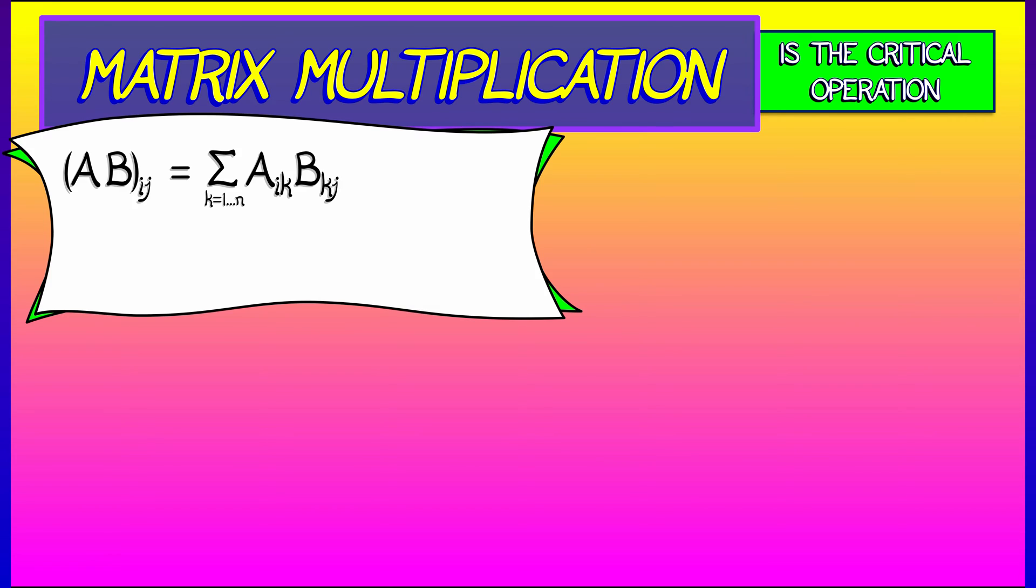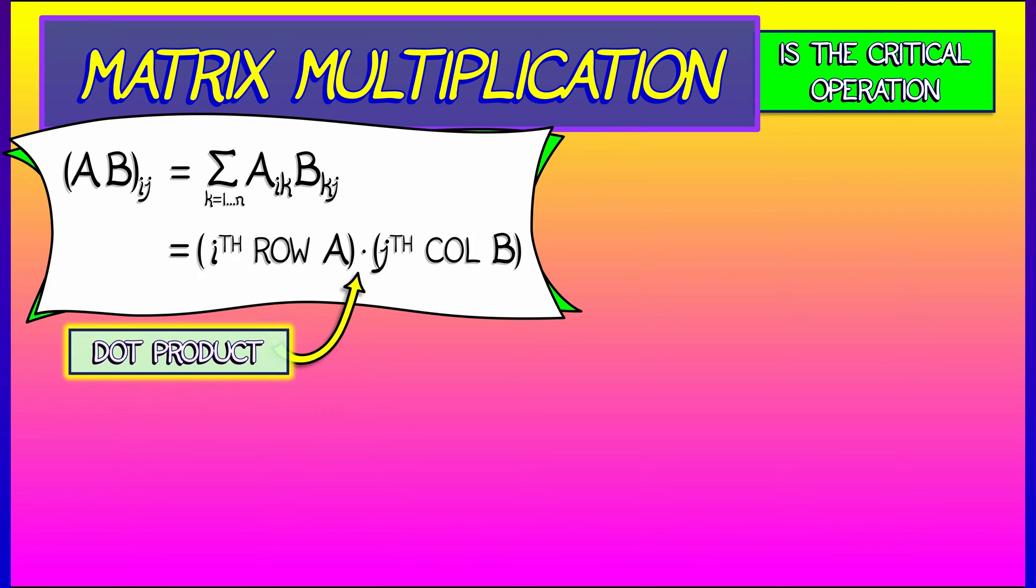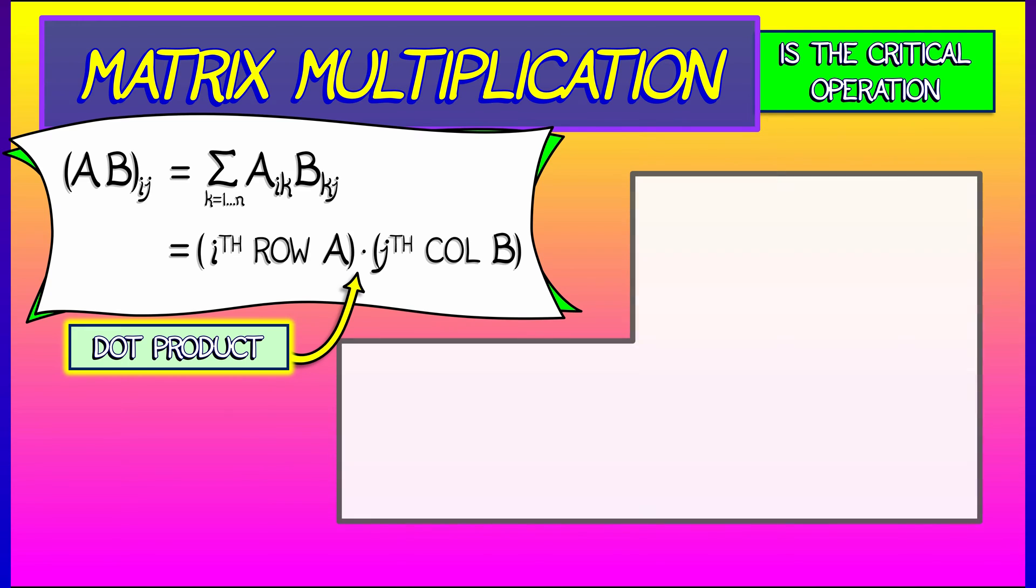Now, what is that? What does that really mean? That's really the i-th row of A dot product with the j-th column of B. That's really what that formula means if you dig into it.